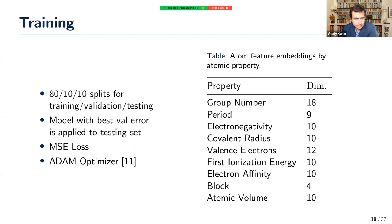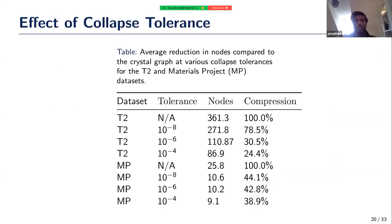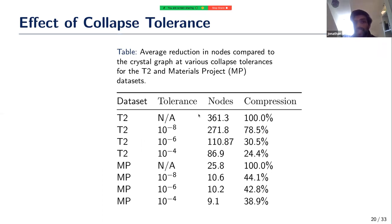The first experiment examines how changing the PDD graph parameters affects graph size. For the first four rows — T2 dataset — and the last four — Materials Project — the row without a tolerance indicated is equivalent to the crystal graph size: about 361 nodes for T2 and about 26 for Materials Project. The PDD graph with increasing tolerance produces more collapses, shrinking the number of nodes. The 'compression' column shows the percentage of nodes remaining relative to the original crystal graph.